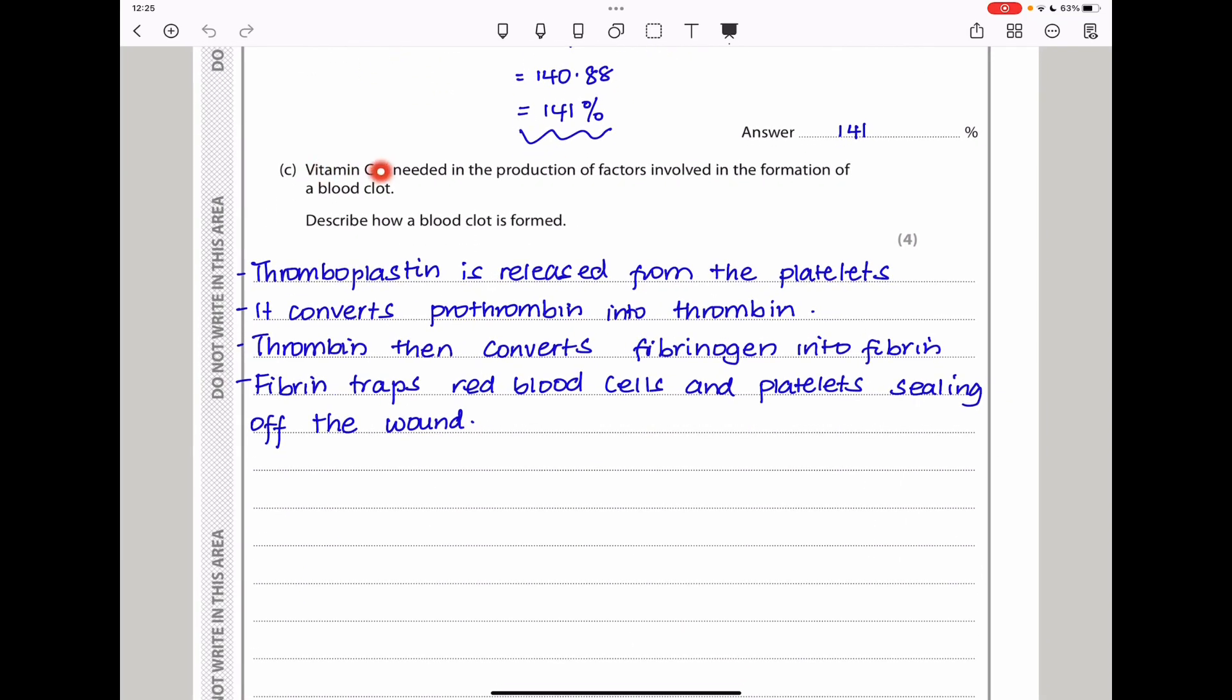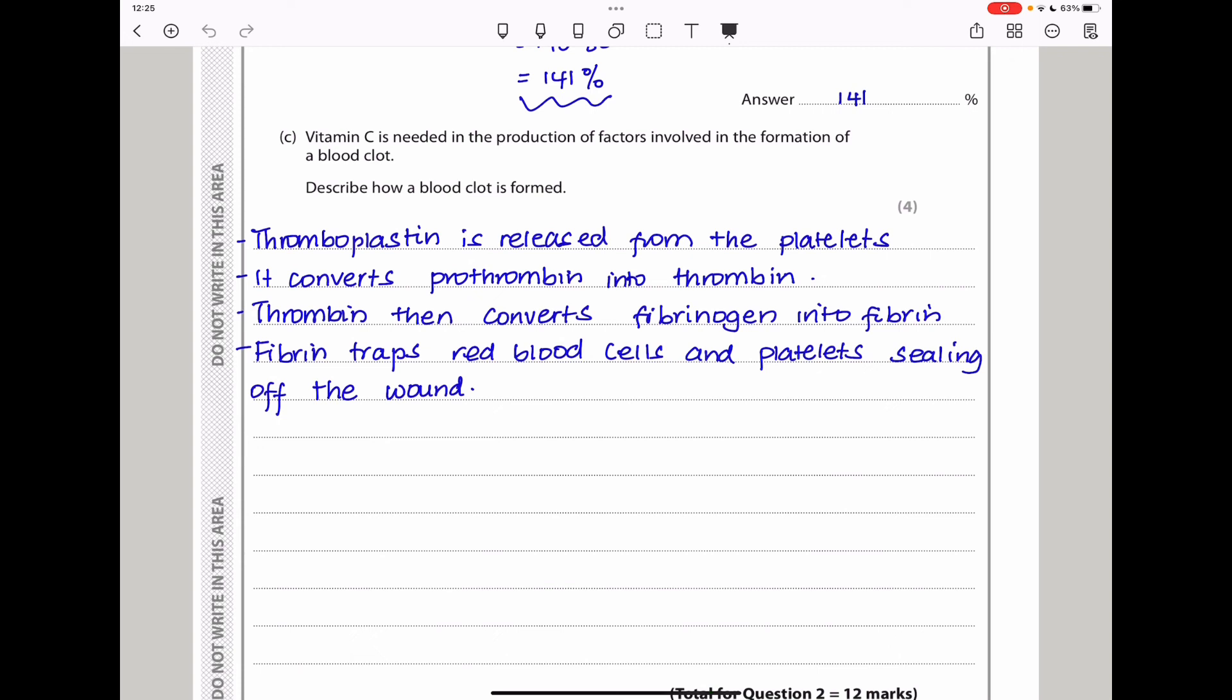Vitamin C is needed in the production of factors involved in the formation of a blood clot. Describe how a blood clot is formed. During the formation of a blood clot, thromboplastin is released. Inside the platelets, that's where we're going to have the thromboplastin. When there is damage to the skin and these platelets come into contact with some of the proteins within the surface of the skin, it leads to the bursting and the release of thromboplastin.